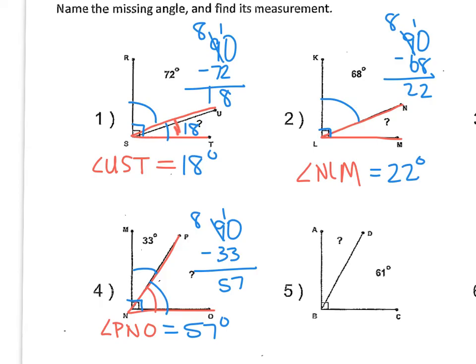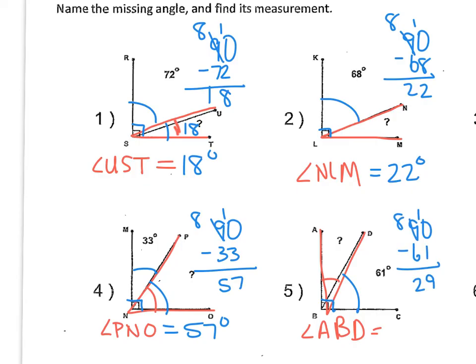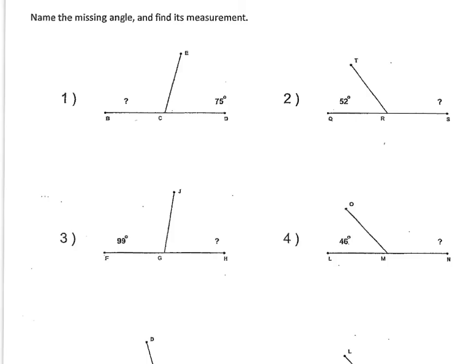One final example — the missing angle is angle A-B-D, tracing from A to B to D. Together they make a 90 degree angle, so we do 90 minus 61, and we're left with 29 degrees. So this angle must be 29 degrees. Those are some examples of how to find a missing angle when given complementary angles.